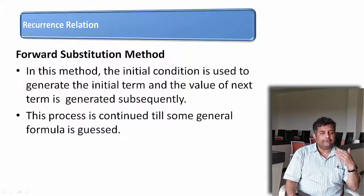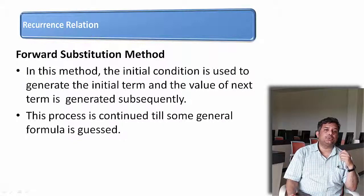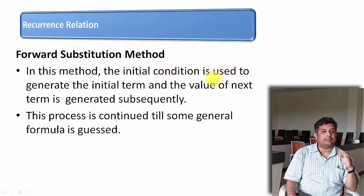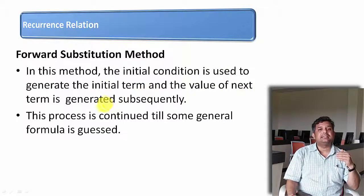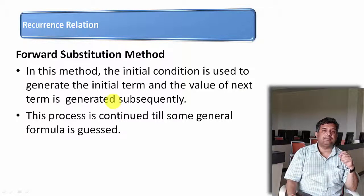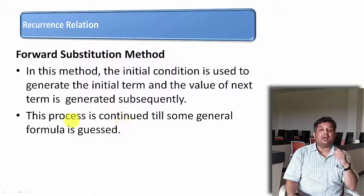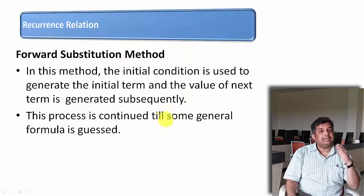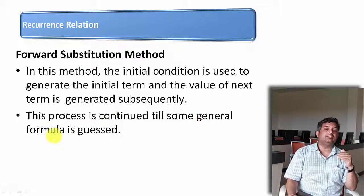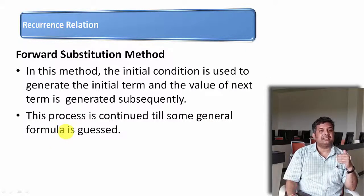In forward substitution, what we do is: the initial condition is used to generate the initial term, and the value of the next term is generated subsequently. This process is continued until some general formula is guessed.